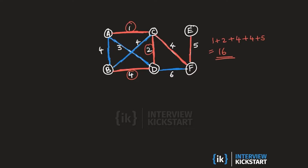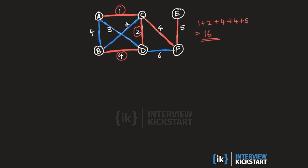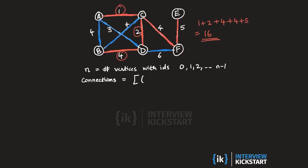How are we going to implement this algorithm? The graph is weighted, so our input will be a number n — the number of vertices — with IDs in the range 0 to n−1. We also have an edge list, or connections list, which is a sequence of triplets. Each triplet has a source and destination — better called u and v since this is an undirected graph — plus a weight or cost field associated with each edge.